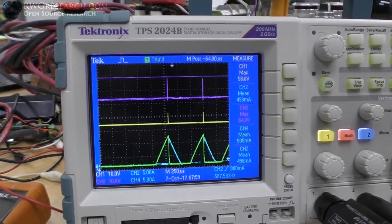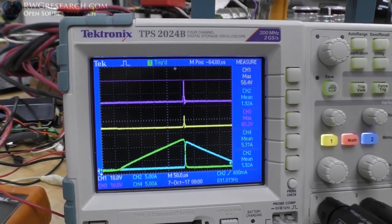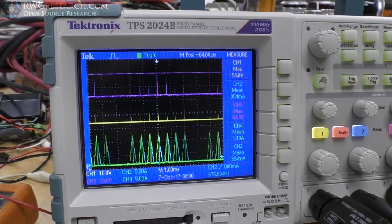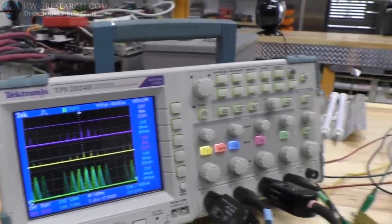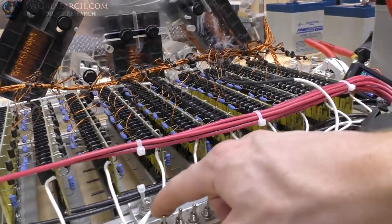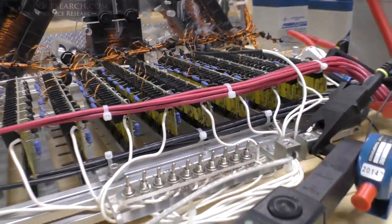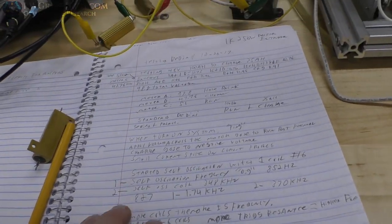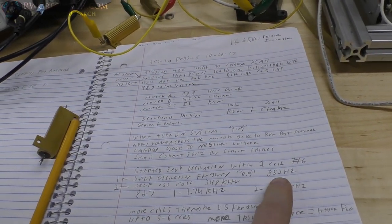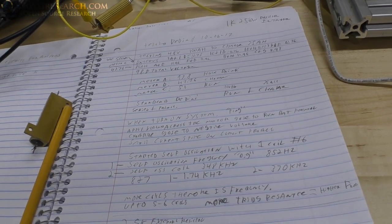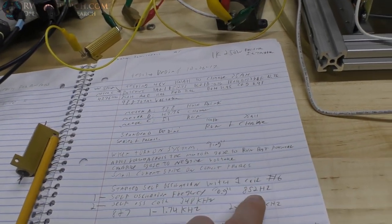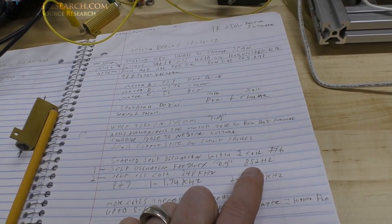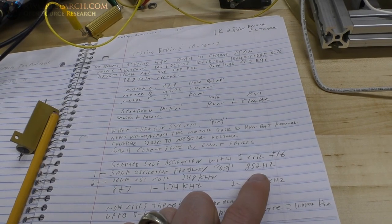But I have to have enough trigger current, so if the trigger current isn't enough then the oscillation stops after a few coils are triggered, which is kind of interesting. My terrible sloppy notes here, but the self oscillation frequency is somewhere around 852 Hertz depending on the current and depending on how many coils you connect.